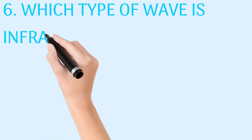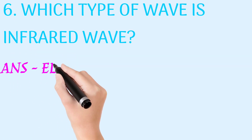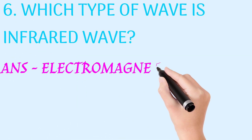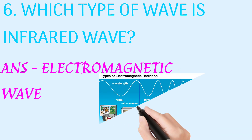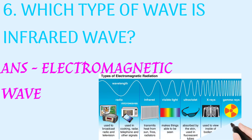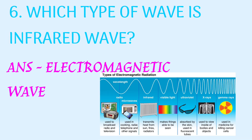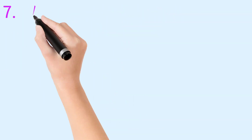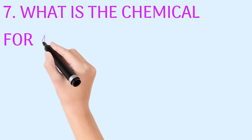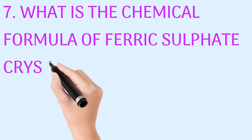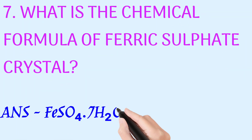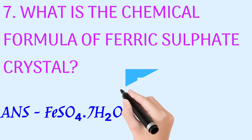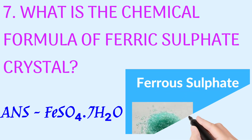Which type of wave is an infrared wave? Answer: electromagnetic wave. What is the chemical formula of ferric sulfate crystal? Answer: FeSO₄·7H₂O.